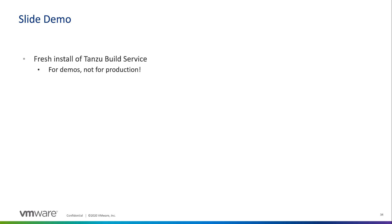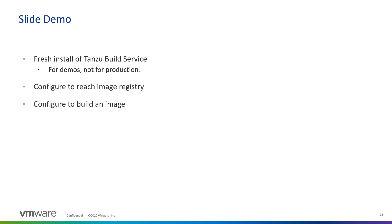The first thing we need to do is configure Tanzu Build Service to reach my Docker Hub image registry, so it can push the images it creates to that location. I'll do this by creating a secret in Tanzu Build Service. Then I'll put together an image configuration, which will tell Tanzu Build Service what code to build, how to build it, and where to put the resulting OCI image. This will be enough for Tanzu Build Service to kick off an initial build of my application.